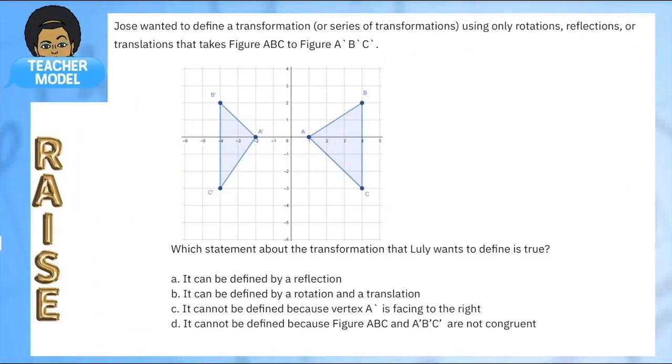Let's go to the next one. Let's read through it. Jose wanted to define a transformation or a series of transformations, so it means it could be one it could be many, using only rotations, reflections, or translations. Okay, so that's all we can use. Which statement about the transformation that Lily wants to define is true? So which one of these transformations is true? And my guess is that this is the wrong name, it should be Jose. Apologies. Which one has to be true? Okay, so we read the question. In this case we still know it's geometry and we have our original points.